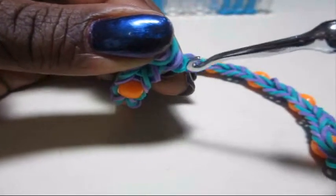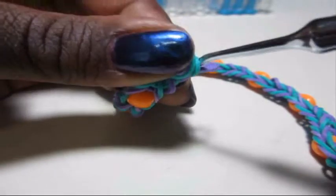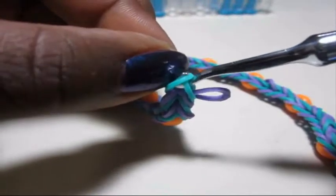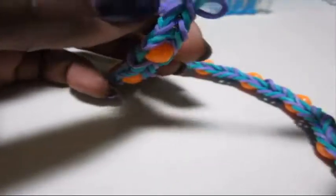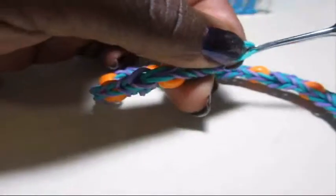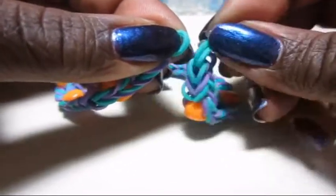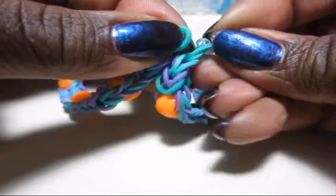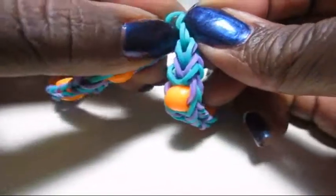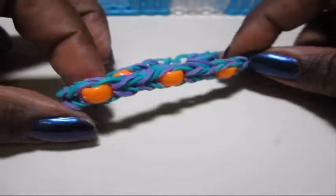And then you can just do it like this. Sorry, it's better to see than me to explain it. And pull. And then just attach it to the other end of the C-clip. So there you have it, a beaded fishtail bracelet.